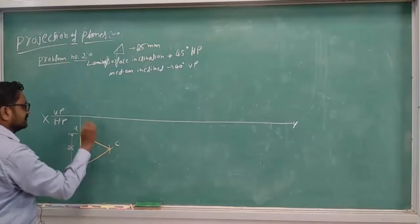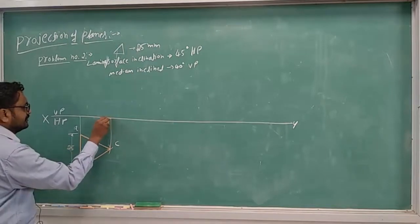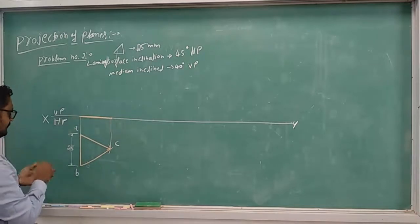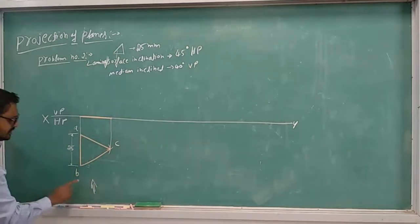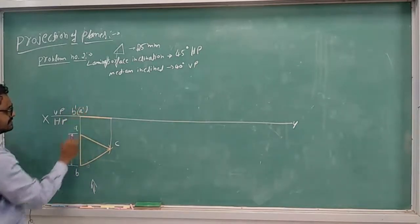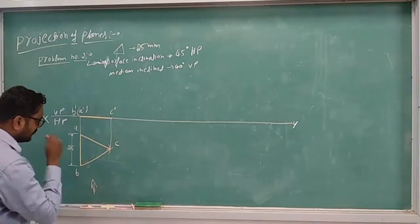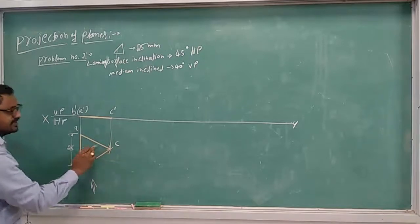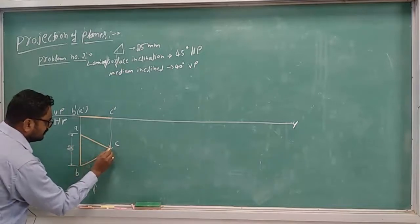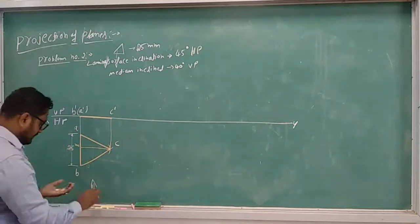After finishing this, we draw projection lines to the XY line to get the front view. The front view will look like a straight line. Since we are viewing from the front, B comes first, then A, so we get B-dash, A-dash, and C-dash. Before going to the next step, we draw the median line from C to the midpoint of AB, which is a perpendicular line. We take this as M — that is the median.